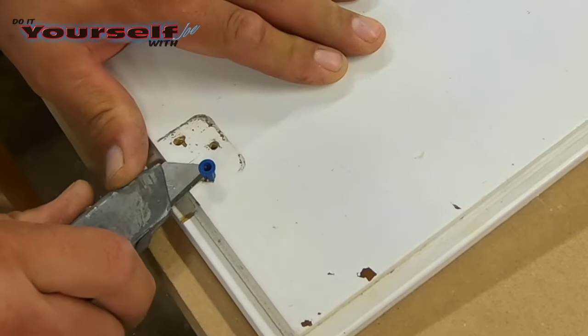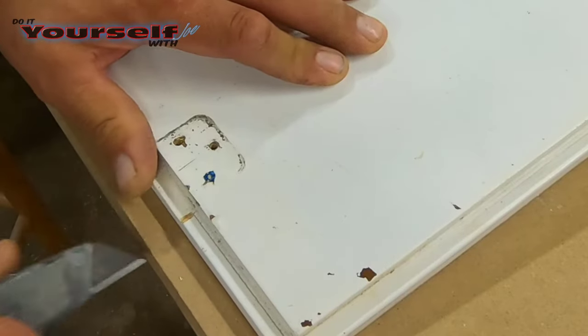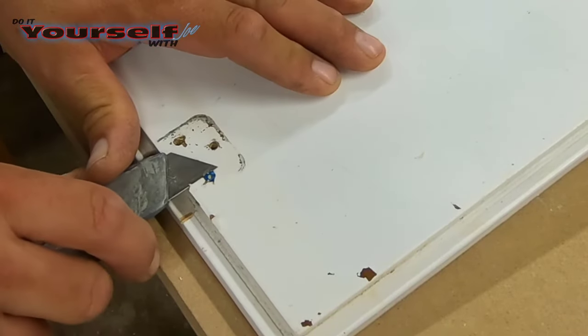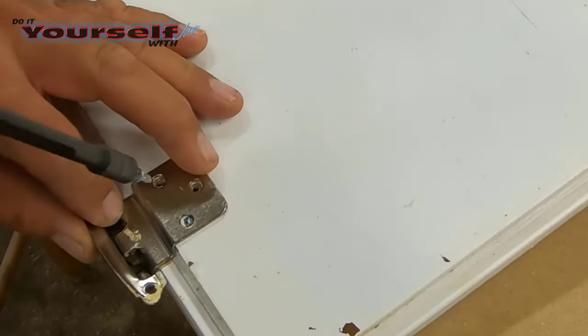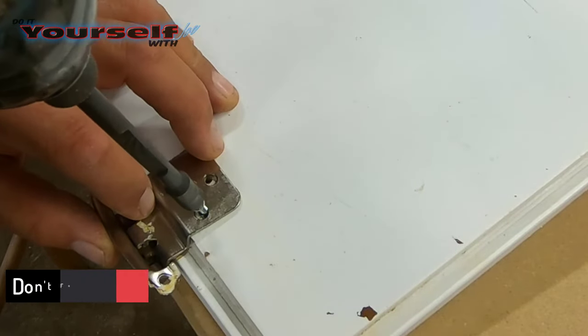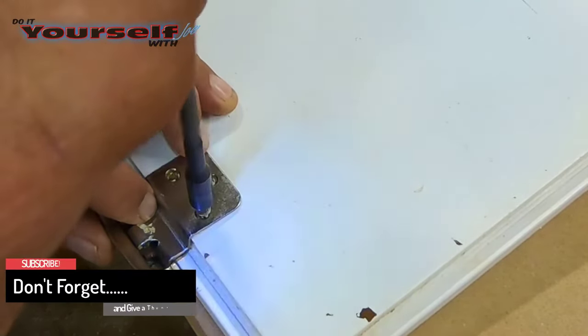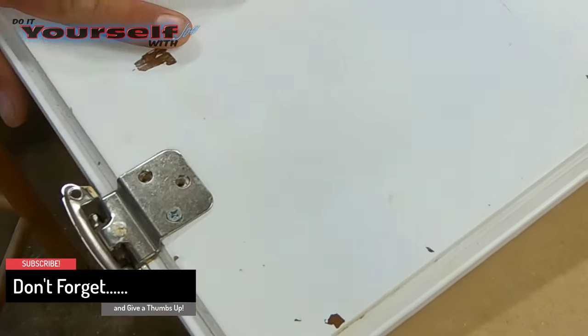Now I'll use a sharp utility knife to trim the molly down flush with the door. You can also use a sharp chisel. Now I can install the screw. And you can see here it tightens up really well.